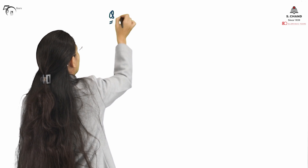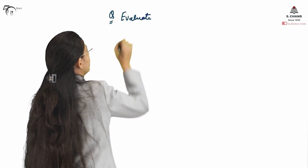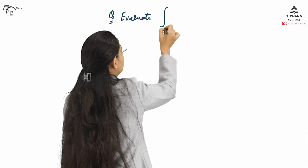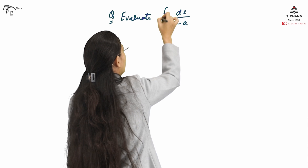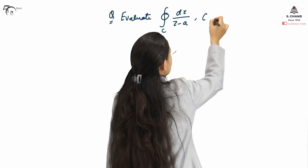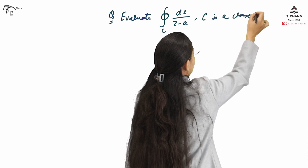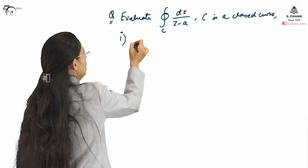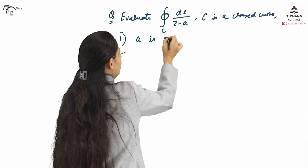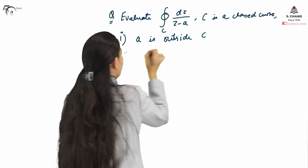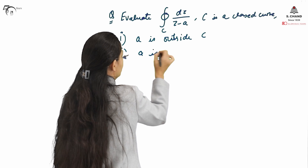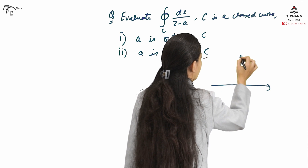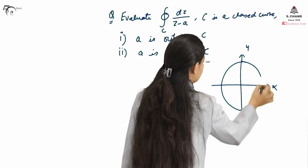Now we will take one question to make it clearer — what is the difference when the function is analytic versus when it is not. Evaluate ∮_C dz/(z − a), where C is a closed curve, in two conditions: first, when A is outside C, and second, when A is inside C.